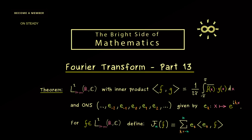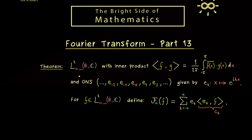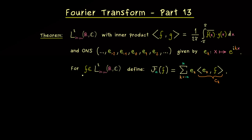The inner product gives us the Fourier coefficient c_k. Now the question is: what happens if we send n to infinity? If we measure the difference between both functions with respect to the L2 norm, then we get convergence — when n goes to infinity, this norm goes to 0.